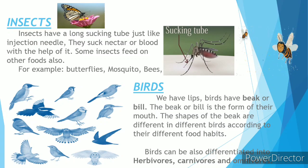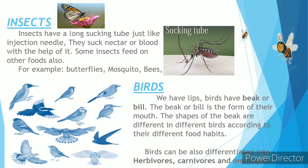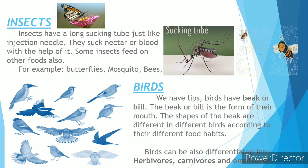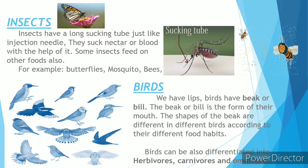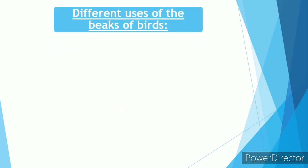Birds' beaks are also designed according to their food habits. Birds can also be categorized into herbivorous, carnivorous, and omnivorous animals. We will discuss their beaks in our next classes. Meanwhile, let's see the different uses of the special beaks of birds.